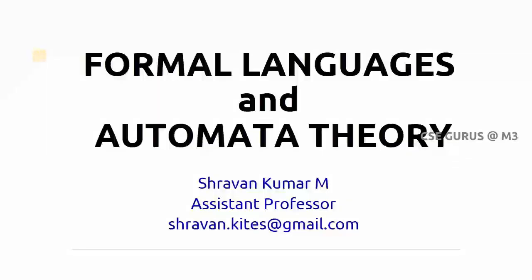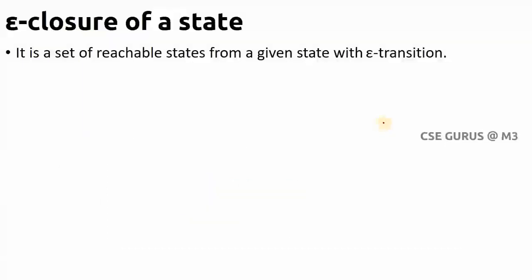Hi friends, welcome to the class of Formal Language and Automata Theory. The next topic is ε-closure of a state. It is a set of reachable states from a given state with epsilon transitions. In previous lectures, moving from one state to another required some input like 0, 1, a, or b. But in finite automata, you can move from one state to another without giving any input — that is an epsilon transition, and the concept is called ε-closure.